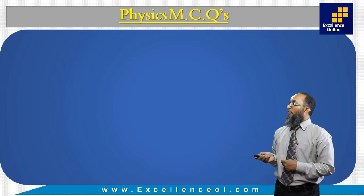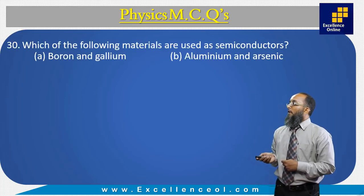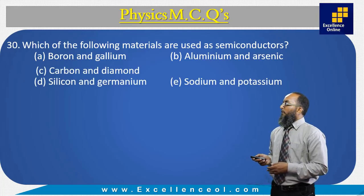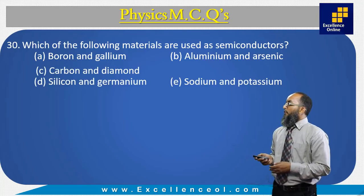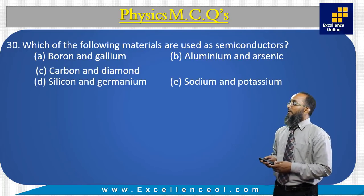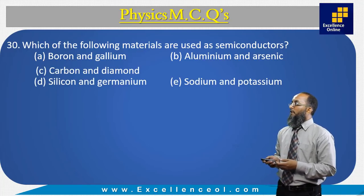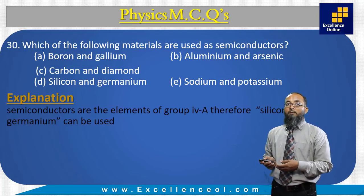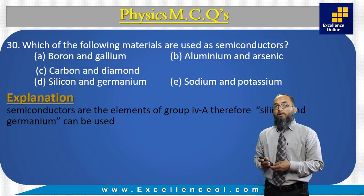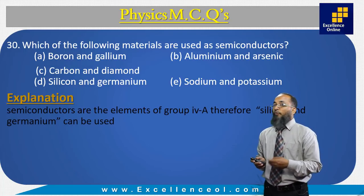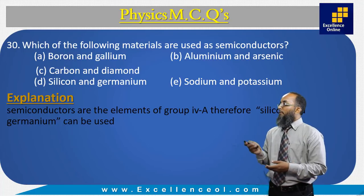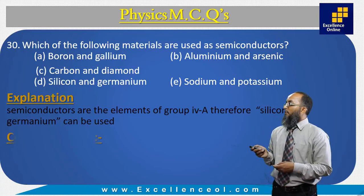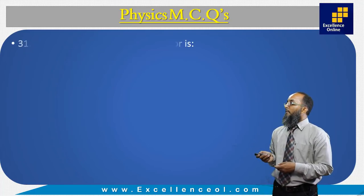Which of the following materials are used as semiconductors? Semiconductor materials are Group 4A elements — silicon and germanium. The correct answer is D.